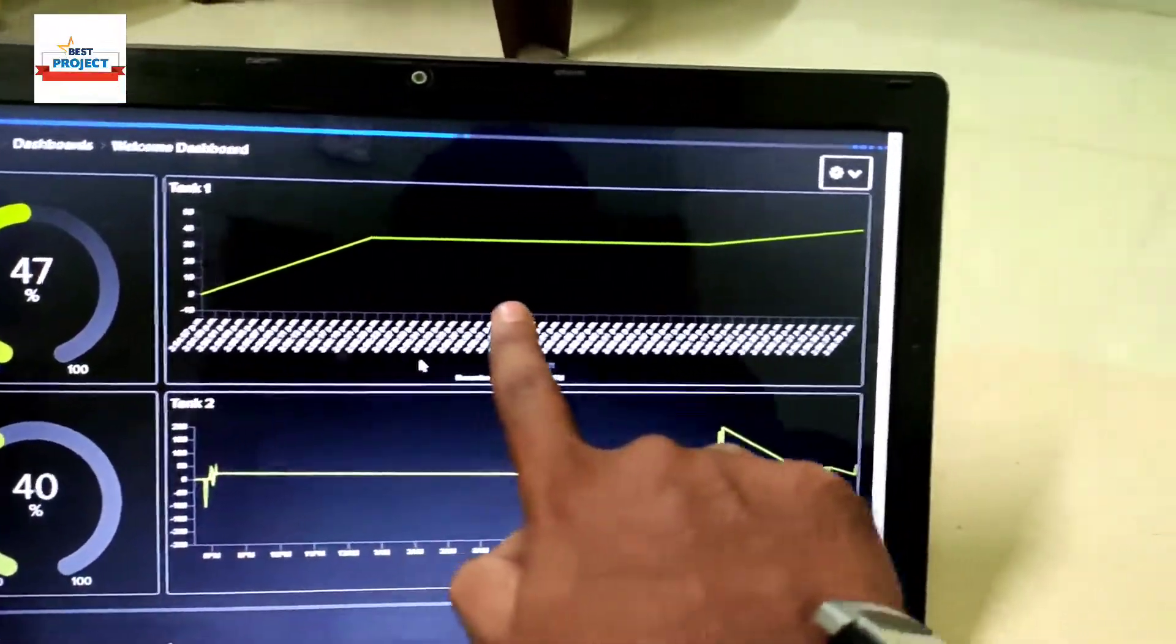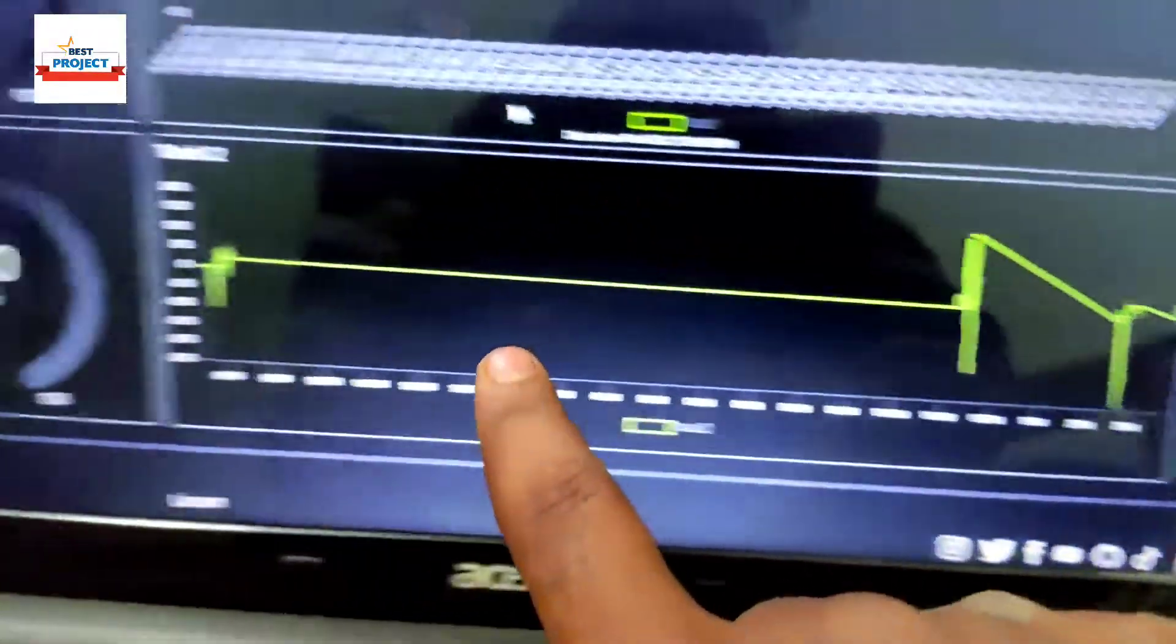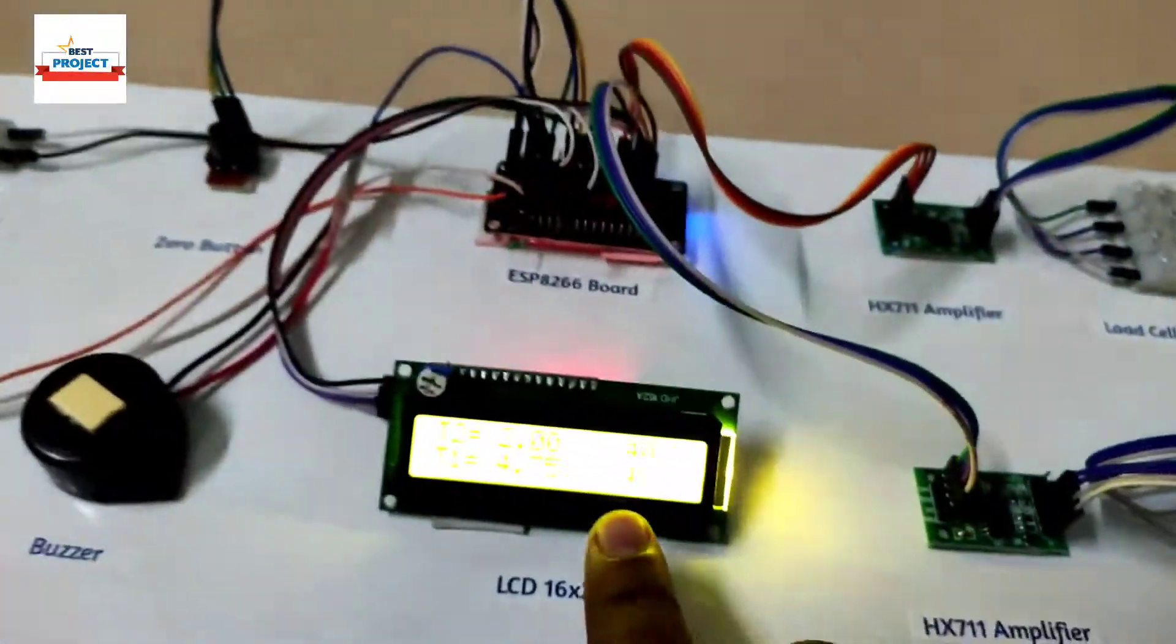The bigger one is 48%, the smaller one is 40%. At the same time, you can see live data on the IoT server showing the exact same readings, so our model is working fine.